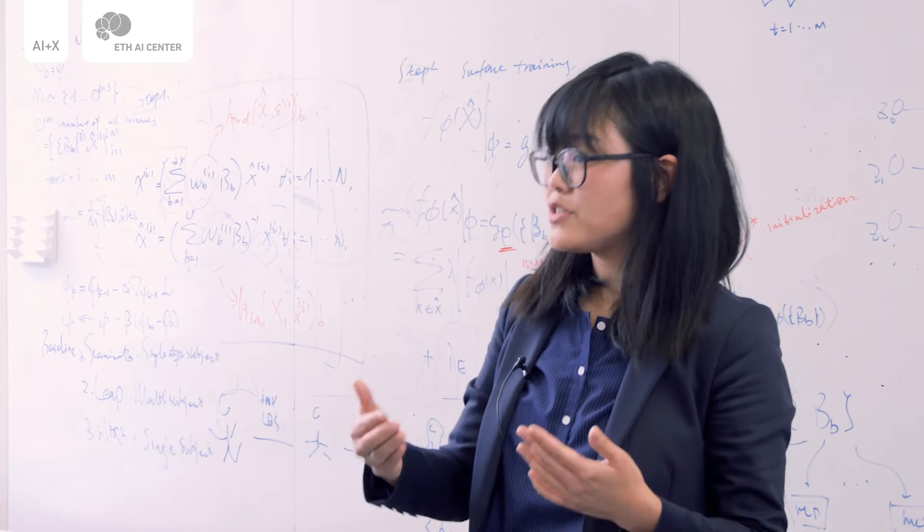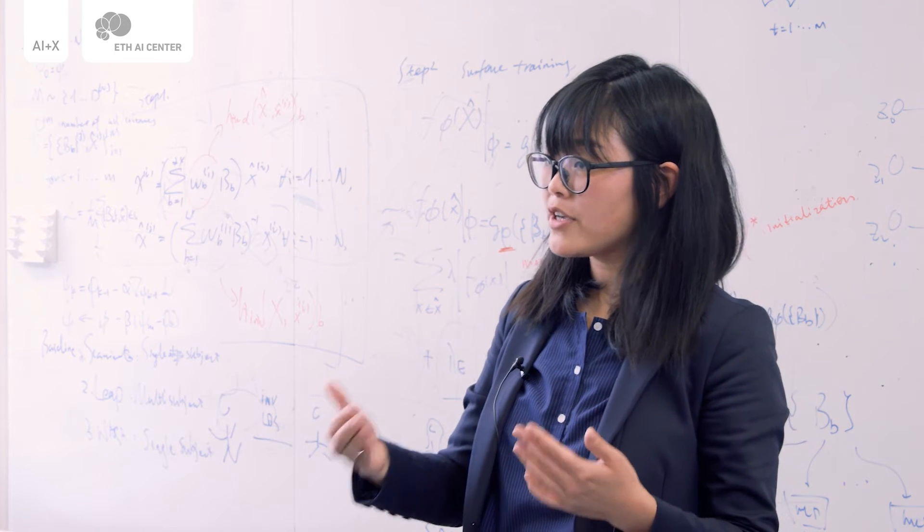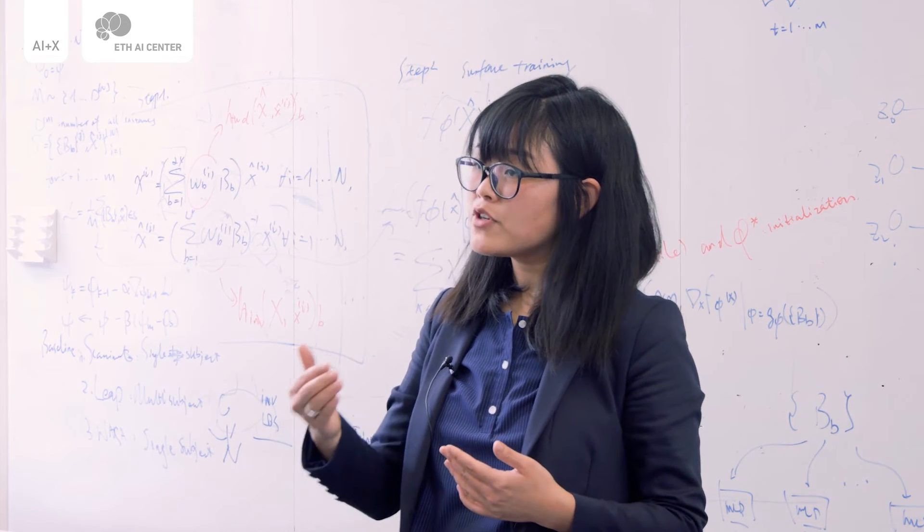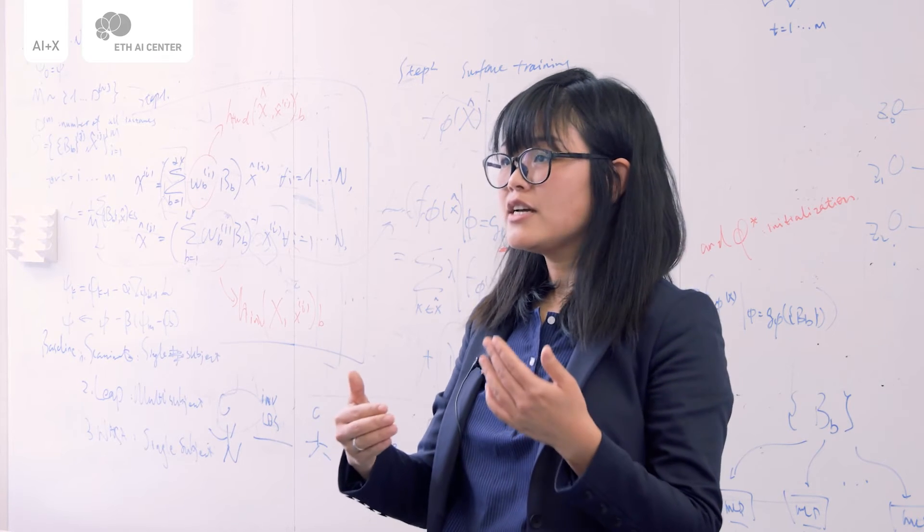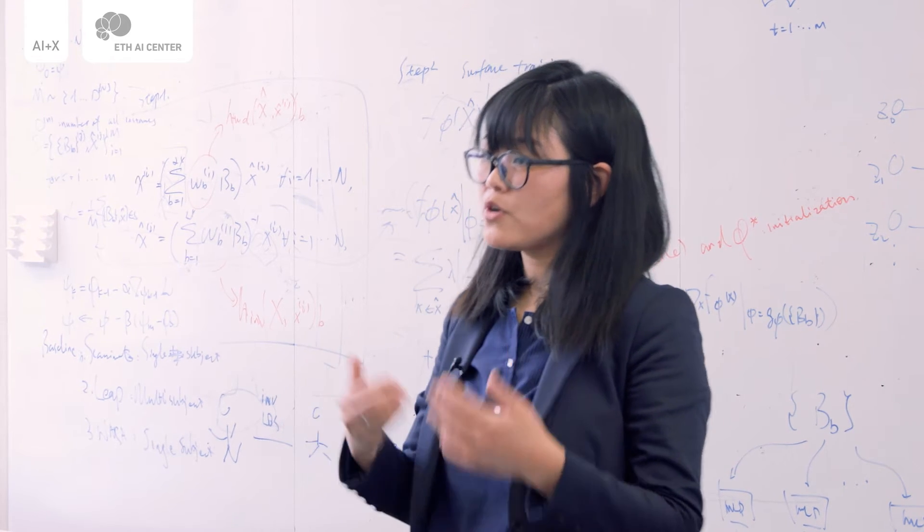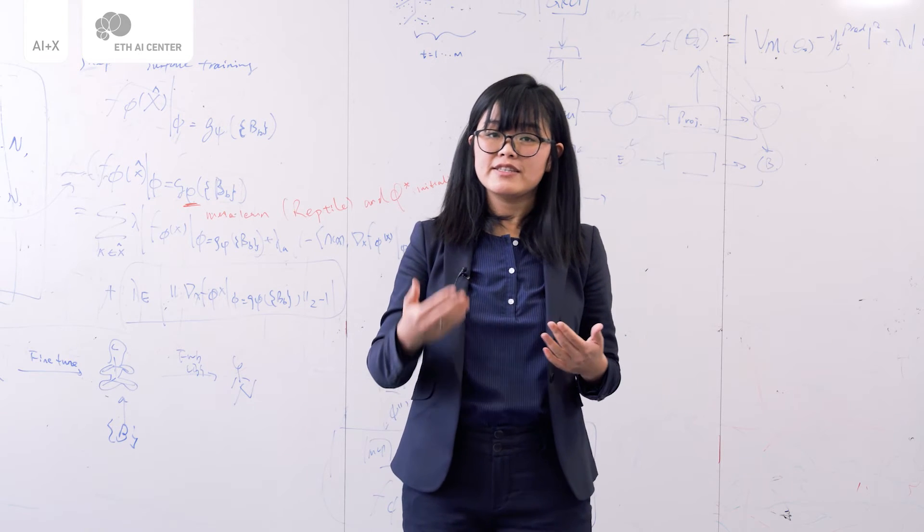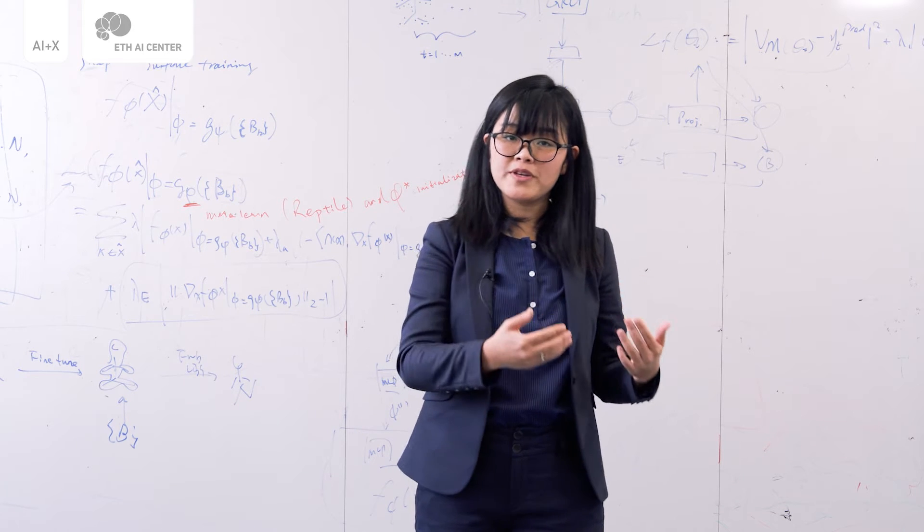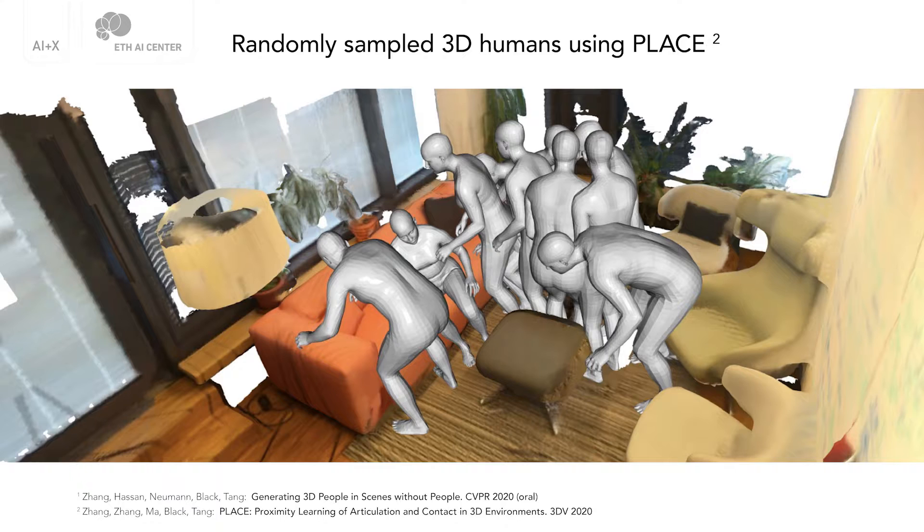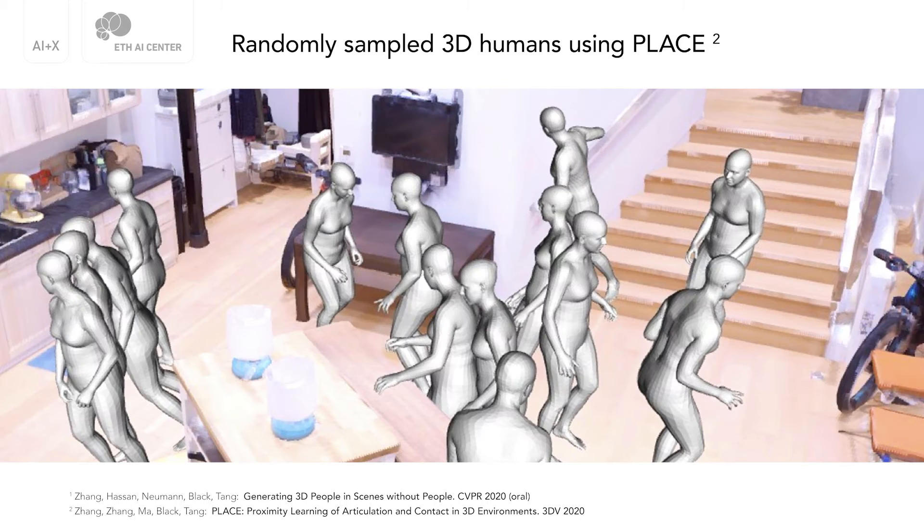A very interesting research question we have been working on recently is how to create virtual avatars, realistic digital humans that interact with the real world realistically. Towards this goal, we have studied several generative models which model human and scene interaction. From these models, we can sample 3D human bodies that interact with the world realistically. These are all random sampled 3D bodies given the 3D geometry using our model that is learned from large-scale datasets.